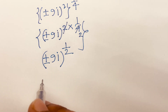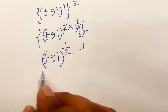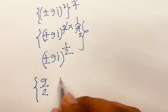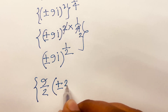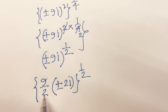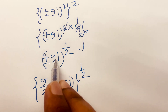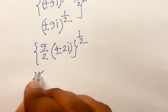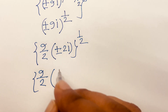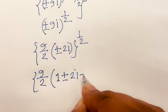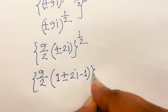Then I can write this as 9 over 2 bracket, plus or minus 2i, raised to the power of one half. Because 2 and 2 are cancelled. Now I can say here is 9 over 2 bracket with 1 plus or minus 2i minus 1, raised to the power of one half.